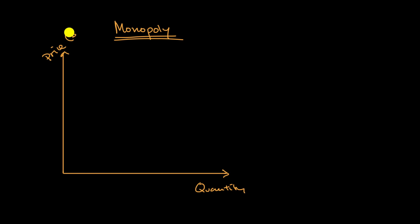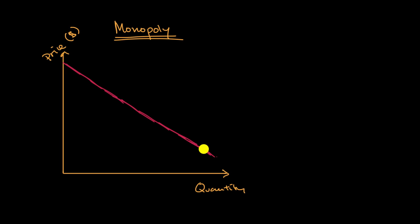We can first think about the demand for this monopoly firm's product. The demand curve looks similar to other demand curves we've seen: at a high price, people wouldn't demand a lot, but as price goes lower, the market will demand a higher and higher quantity. So that might be the demand curve.